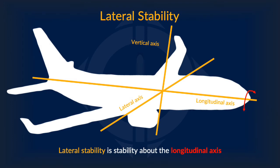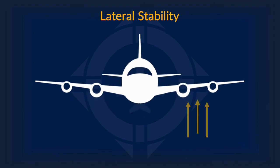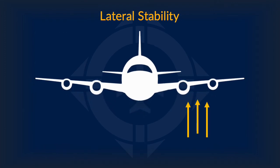Now we move on to lateral stability, which is stability about the longitudinal axes. Everything about positive, neutral, and negative static and dynamic stability on longitudinal stability also applies for lateral stability. So how do we increase the lateral stability of an aircraft? Let's first explore a scenario where the aircraft suddenly encounters a change in its lateral axes.